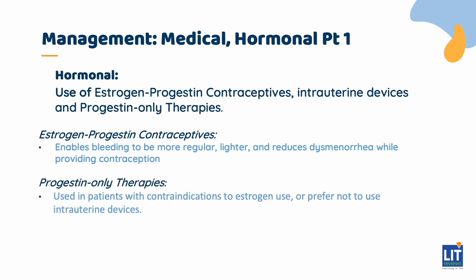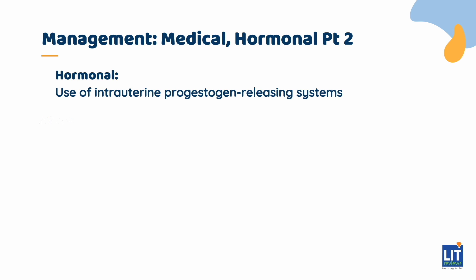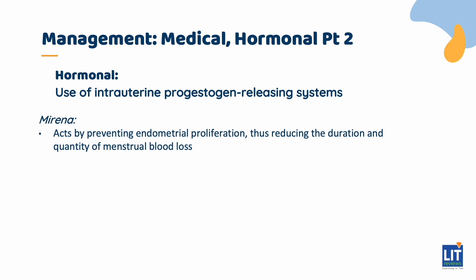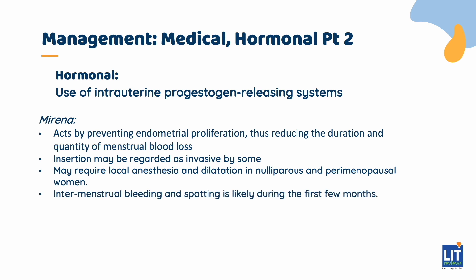Progestin-only therapies can be used in patients with contraindications to estrogen or who prefer not to use intrauterine devices. For those who do not desire pregnancy in the near future or have contraindications to estrogen, intrauterine progestogen-releasing systems such as Mirena are first line. It acts by preventing endometrial proliferation, thus reducing the duration and quantity of menstrual blood loss. It also has a contraceptive effect and can treat endometrial hyperplasia. Disadvantages include the insertion being regarded as invasive, potential need for local anesthesia, frequent intermenstrual spotting in the first few months, and risks of ectopic pregnancy, perforation, and expulsion.